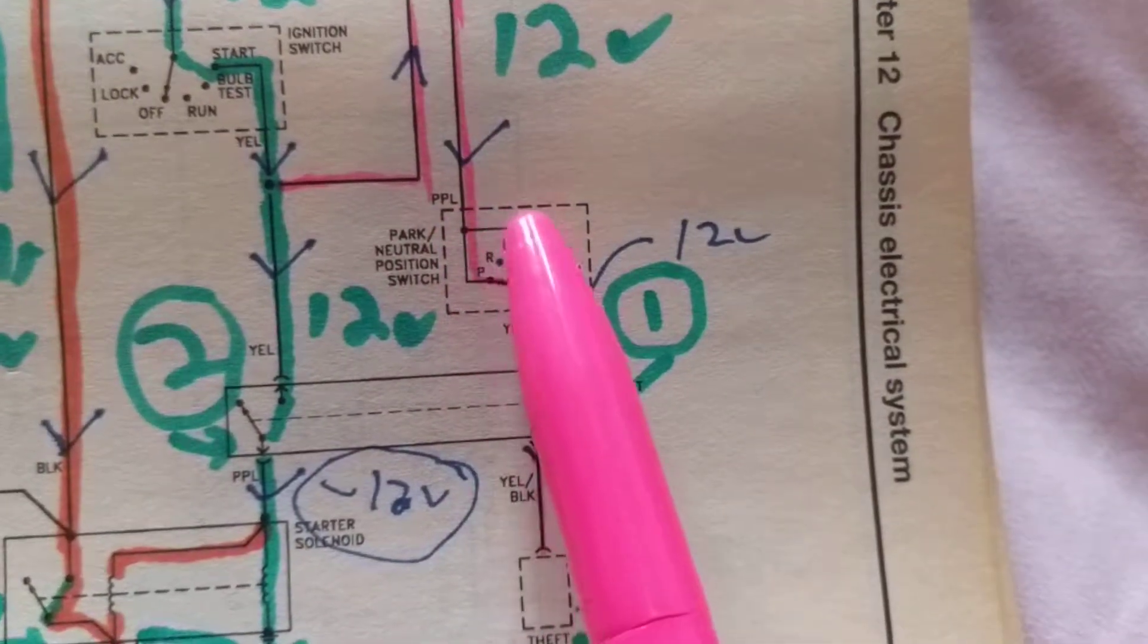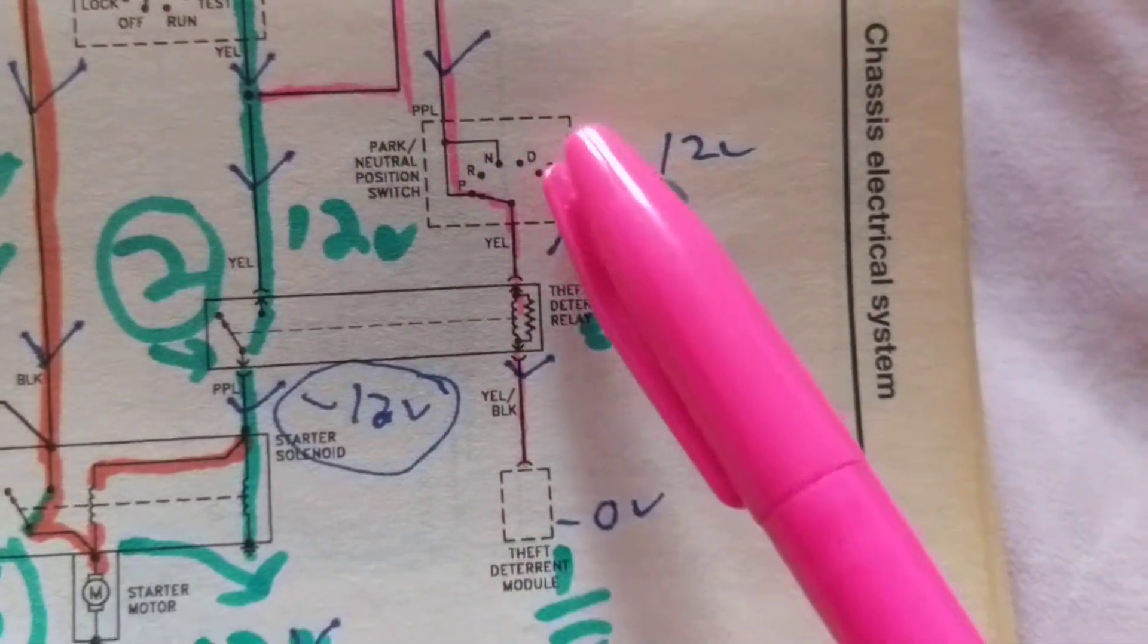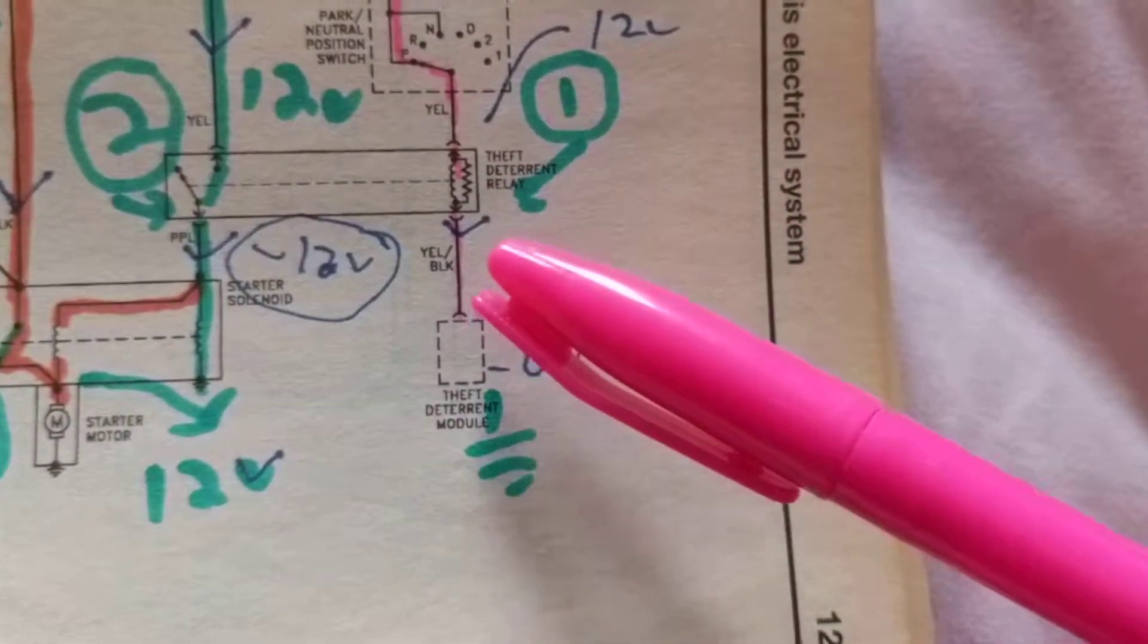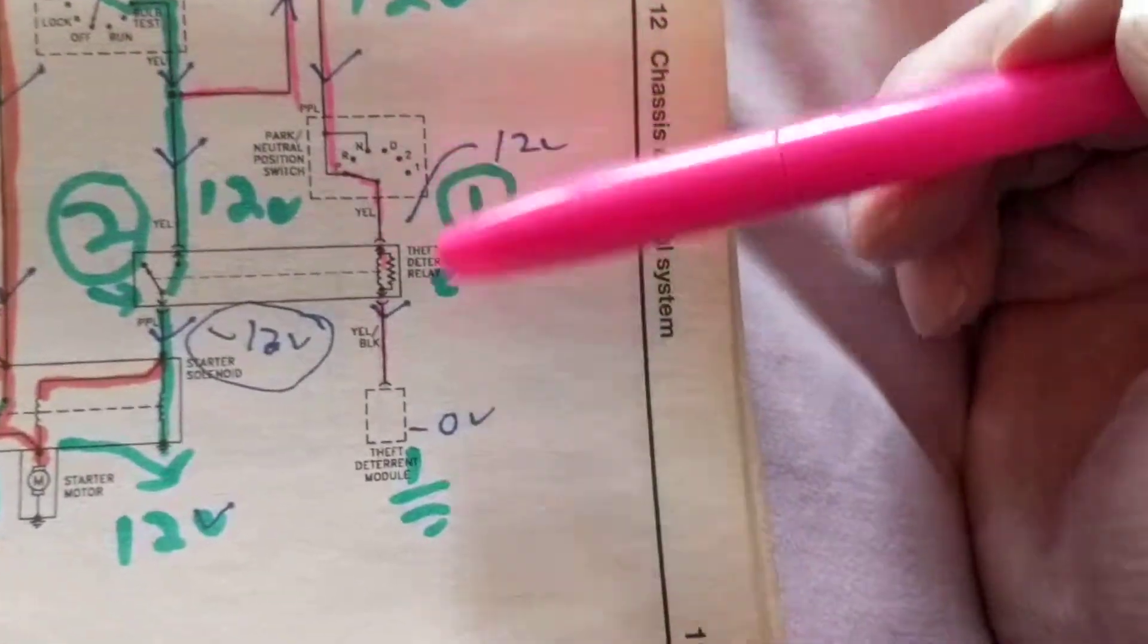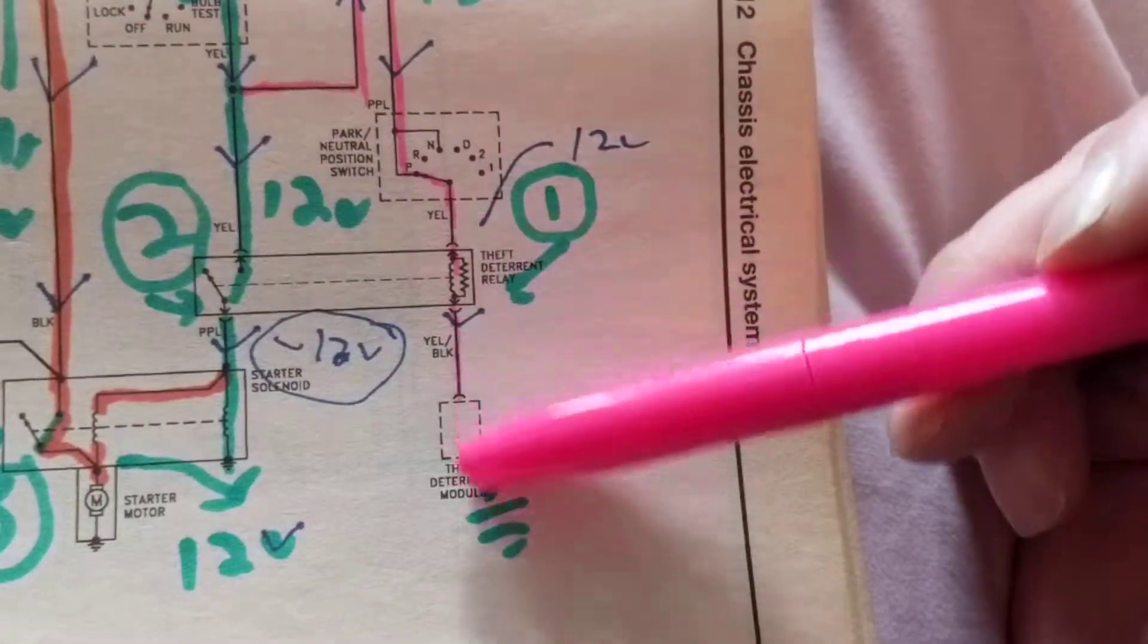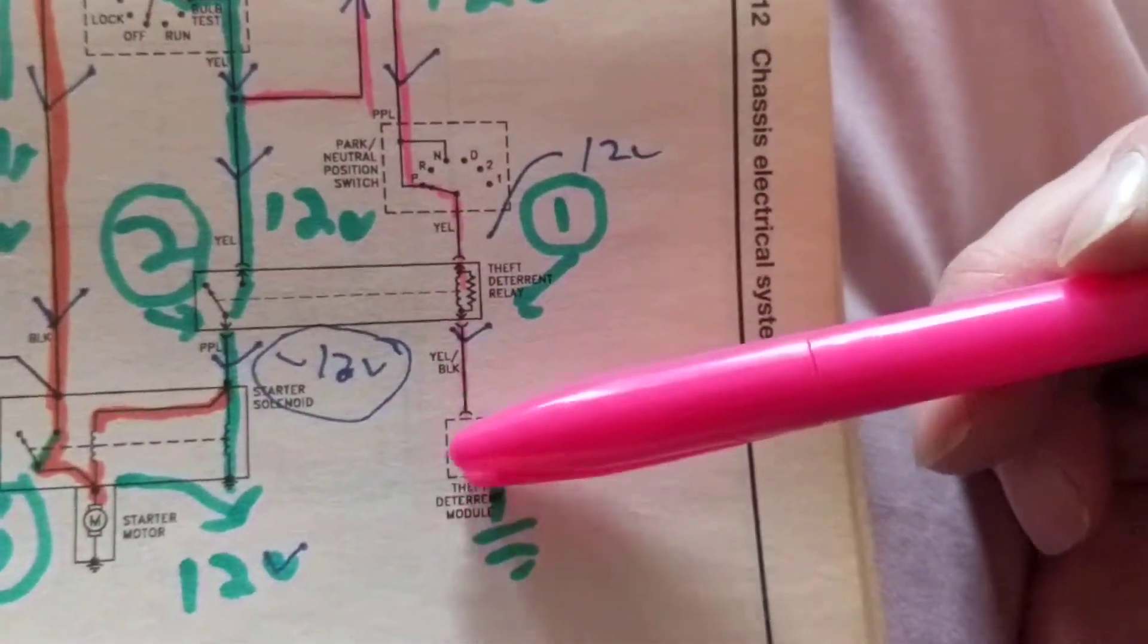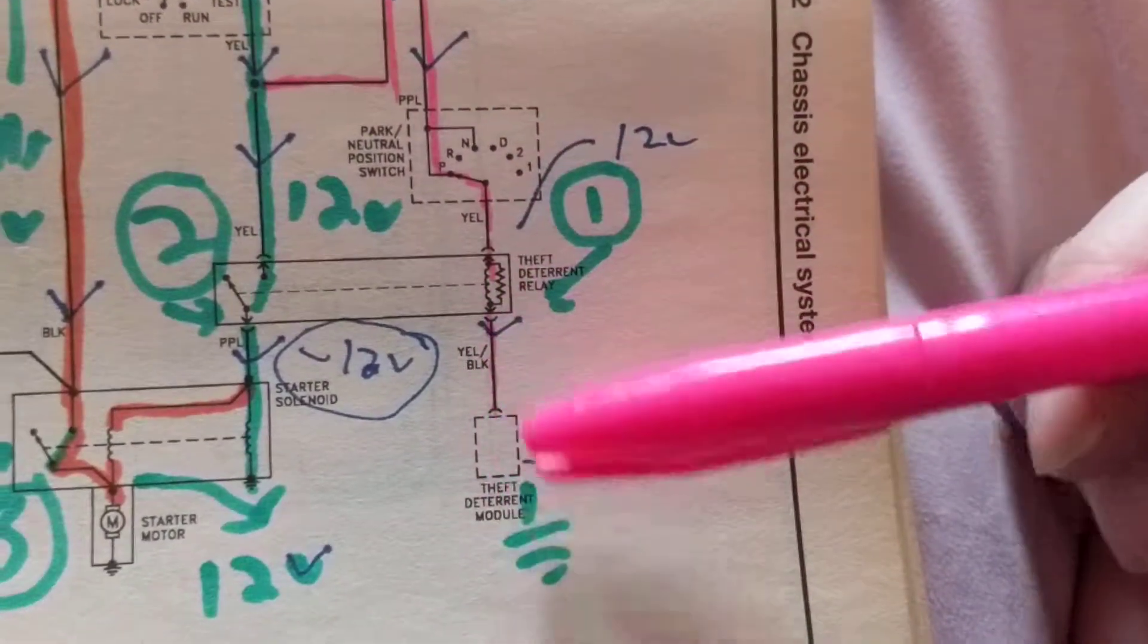So, when we come over here, neutral, or this, we'll connect this, and then current will flow through this theft deterrent relay. And then it goes through a module. Now, the principles of usually, of modules are to give a ground to the relay. And this is why I drew a ground over here, to complete the path. Because otherwise, if this is open or this is not activated, current cannot flow. We need a complete path.